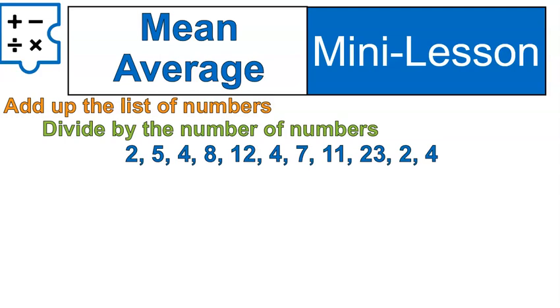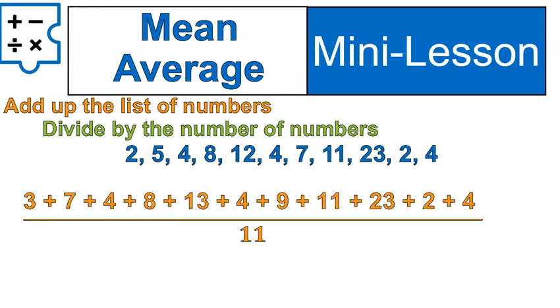So I have to count how many numbers. Let's see. 1, 2, 3, 4, 5, 6, 7, 8, 9, 10. There's 11 numbers. So I'm going to add up all of the numbers and then divide by 11.